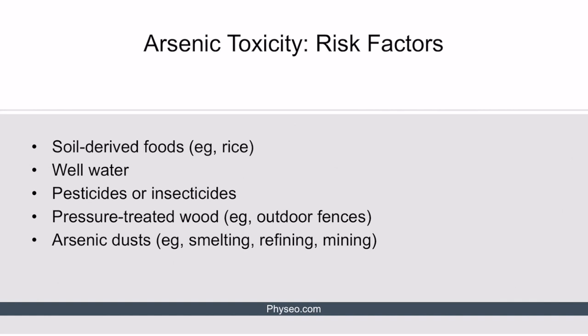There are several important sources of exposure to arsenic. Arsenic can be found in soil, contaminating soil-derived foods such as rice, and it can escape into drinking water, especially poorly managed well water. Arsenic can also be found in various pesticides or insecticides, and since pesticides are used to preserve wood, pressure-treated wood such as outdoor fences can be a source of exposure. Additionally, exposure to arsenic dust can occur in occupations involving smelting, refining, or mining.